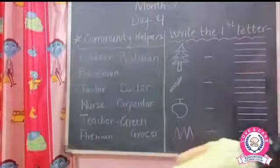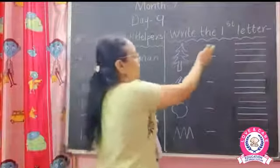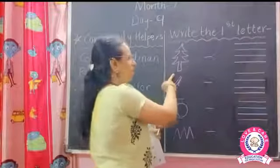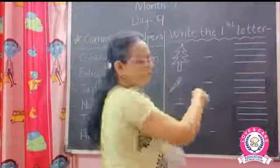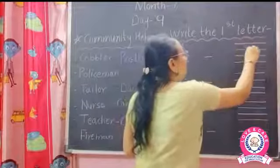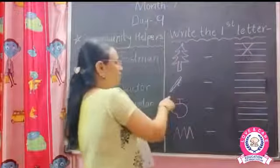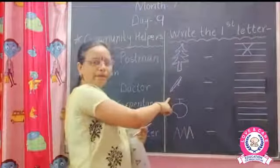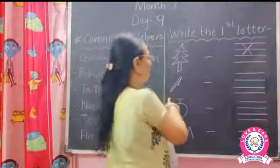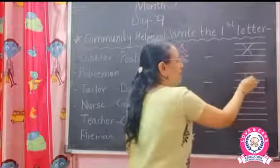Now look at the book. Write the first letter. Which picture? X must be. So the first letter is X. Write here — X. Next, what is this? Pen. P for pen. So the first letter is P. Write here — P.